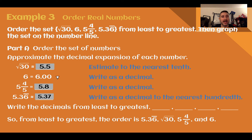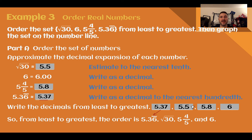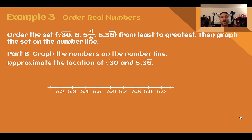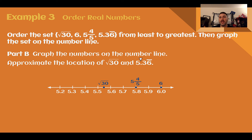Putting them in order from least to greatest: 5.37 is the lowest, then 5.5, then 5.8, then 6 is the largest. Replacing back with original numbers: 5.37 was 5.36 repeating, 5.5 came from the square root of 30, 5.8 was 5 and 4 fifths, and 6 was 6. For Part B, graphing on the number line: the square root of 30 is between 5.5 and 5.6, 6 goes at 6, 5 and 4 fifths at 5.8, and 5.36 repeating goes between 5.3 and 5.4.